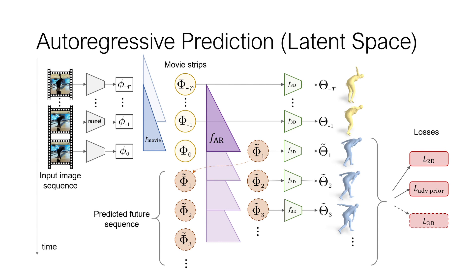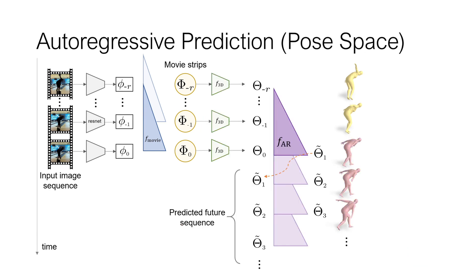We also include an additional distillation loss, which guides the autoregressive model to predict the actual movie strip representation. Alternatively, we can also apply the autoregressive model directly on the predicted 3D mesh model.